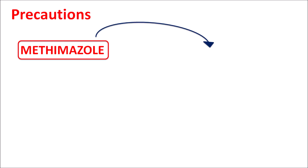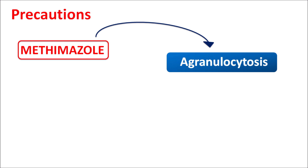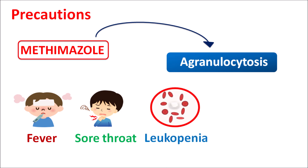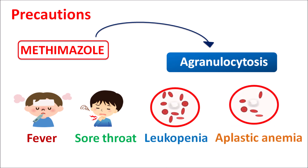One important precaution of methimazole is that this drug can produce a fatal condition — agranulocytosis. Due to agranulocytosis, methimazole can produce neutropenia as well as leukopenia. When patients are prescribed methimazole, certain symptoms should be carefully monitored as they indicate the development of agranulocytosis, such as fever with chills and development of sore throat.